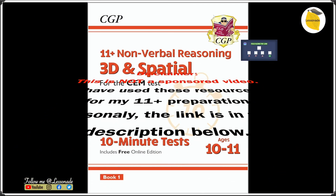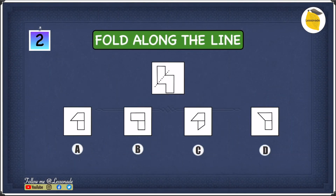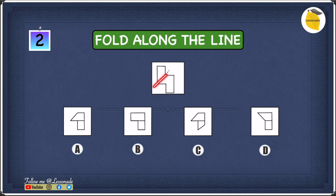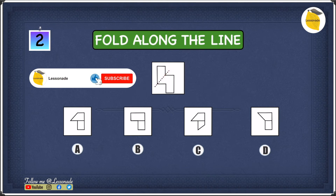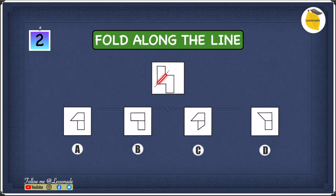Now let's look at the second example. Here, the paper is being folded diagonally along a line crossing two points. Because the paper is folded diagonally, it must have a diagonal edge. So if an option has no diagonal edge at all, we cross it off. In A, there is one diagonal edge — so A is fine. In B, there is no diagonal edge at all, so we cross off B.